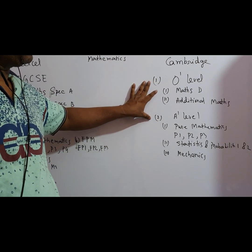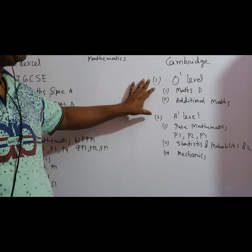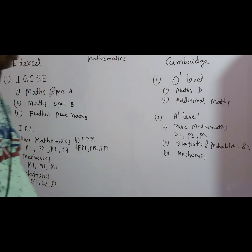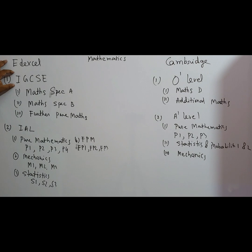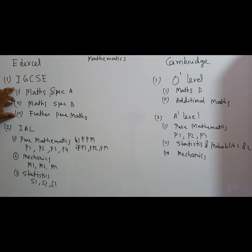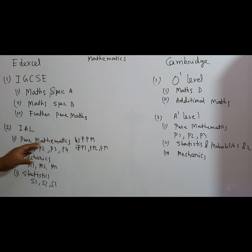Most schools in our country provide O level and A level. IGCSE is available for some subjects, but maths is widely available at O level and A level. Now, for IGCSE, there are three options — it is a bit easier: maths specification A, maths specification B, and further pure maths.